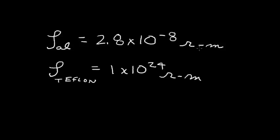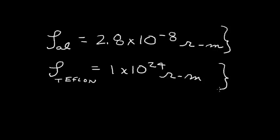What this tells us is that if we had a 1-meter cube of aluminum — which is huge — that would have a very small resistance, about 2.8 times 10 to the minus 8. But if we had the equivalent cube of Teflon, it would have an enormous resistance. That's because in aluminum, it's a metal and the electrons are very free to move — they're very mobile. However, in Teflon, the electrons are bound very tightly to the atom; it takes a lot of energy to separate them and make them move. So Teflon makes a very good insulator, and aluminum makes a very good conductor.